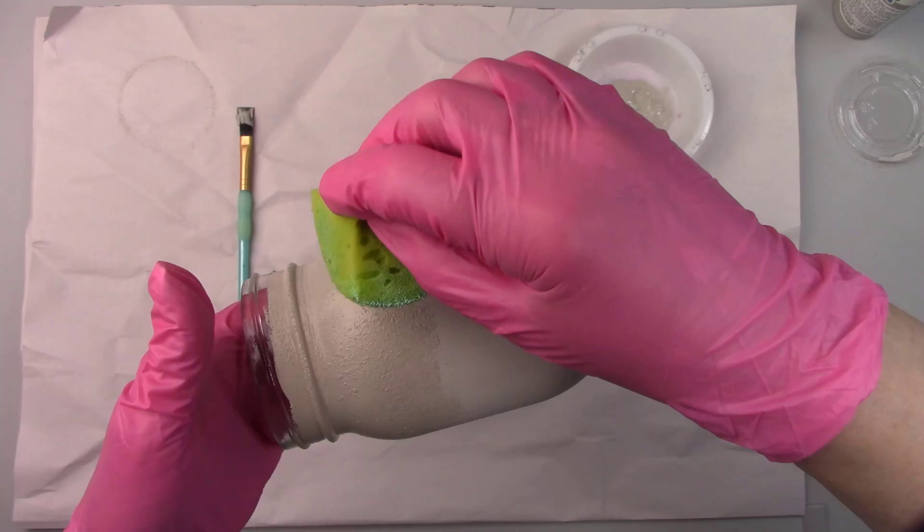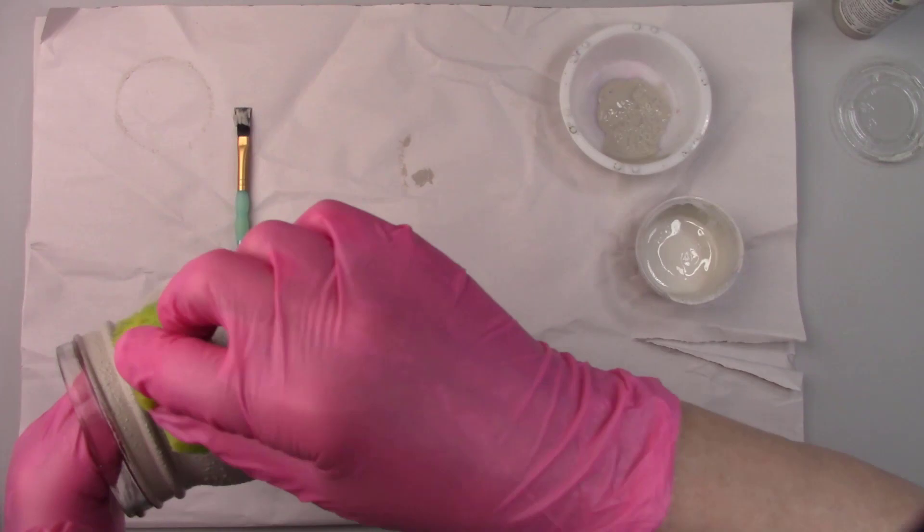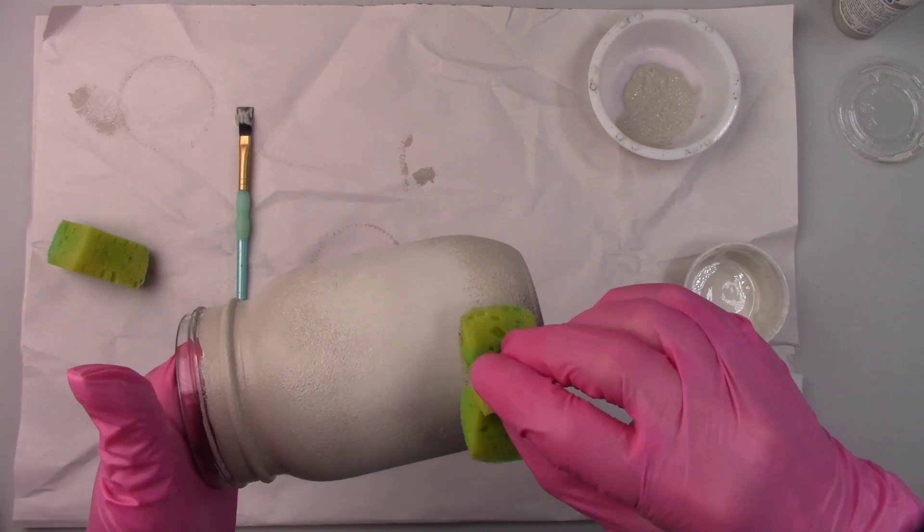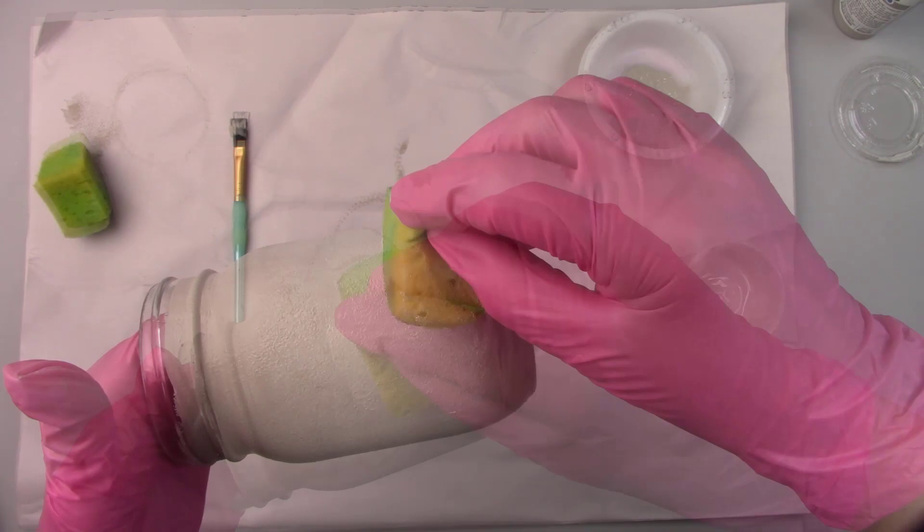I have a video on how to paint ombre with very specific instructions on how to do it. You can click the link in the upper right hand corner to see that video. I'll leave links in my description box for these videos as well. I'm going back and forth with a sponge blending the two colors until I'm happy with the results.